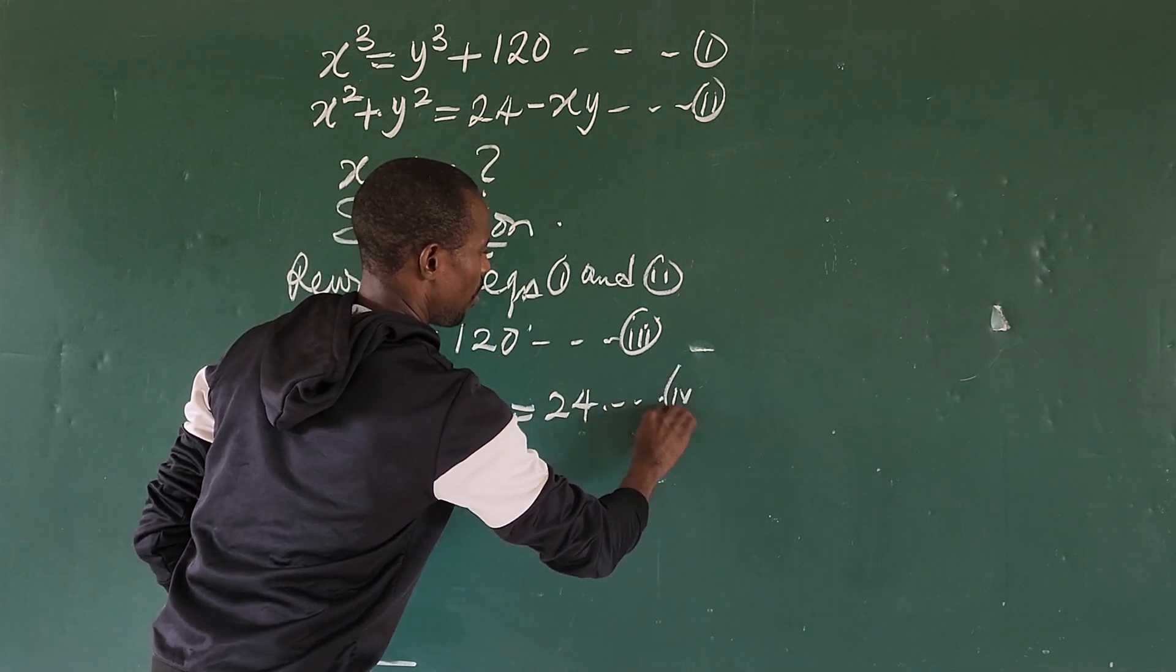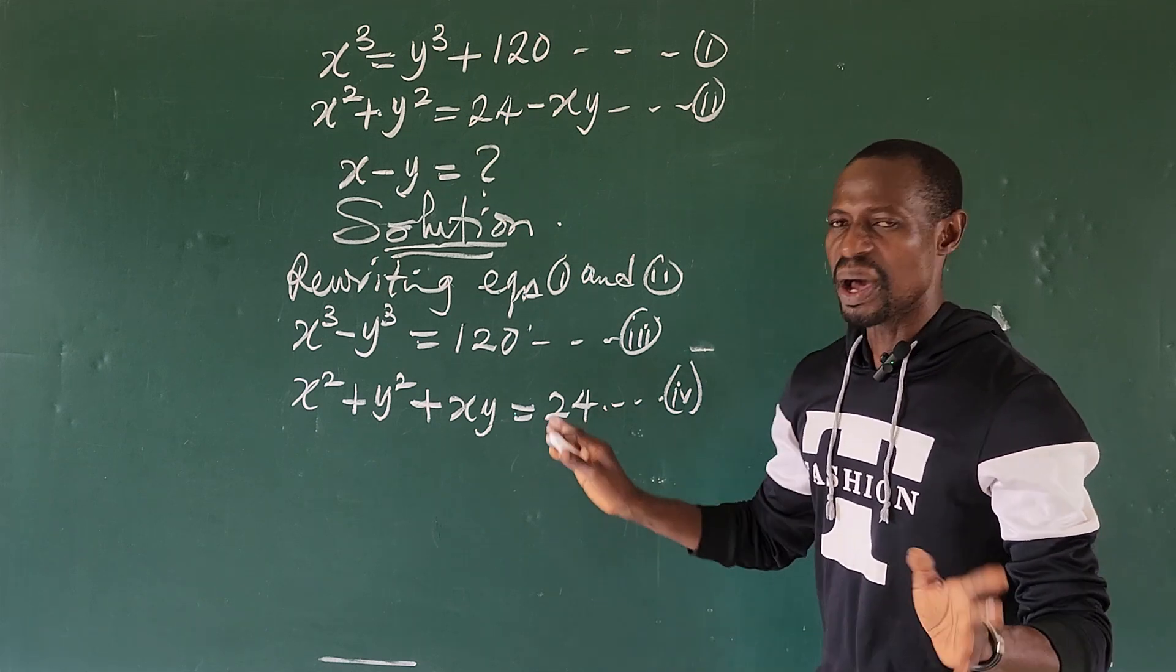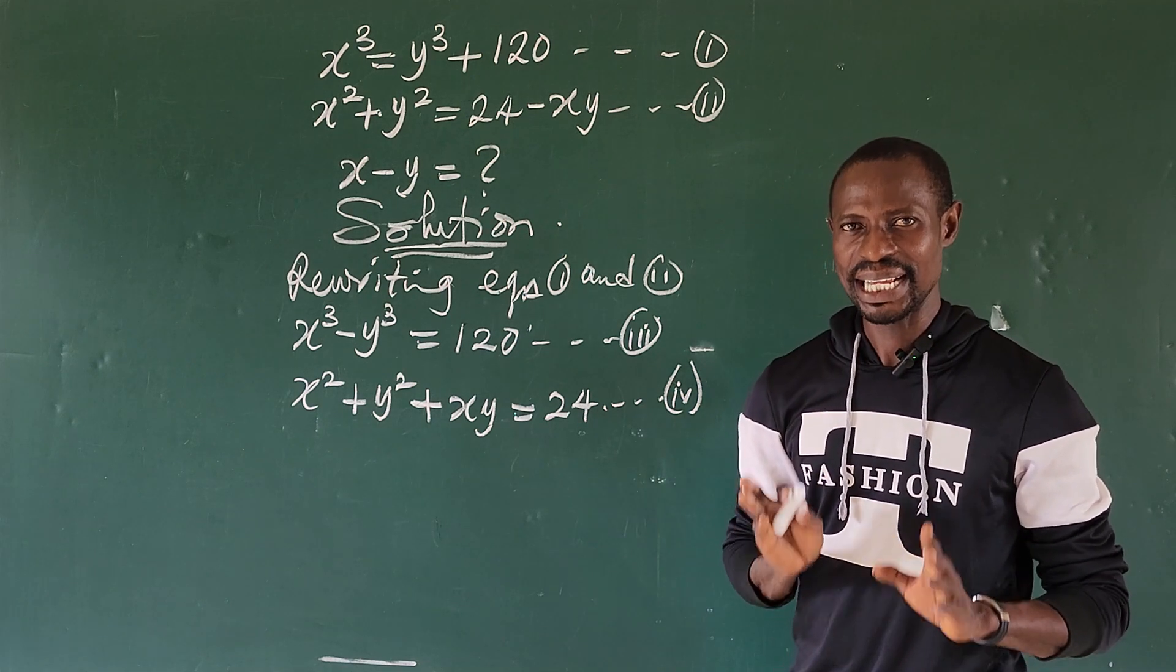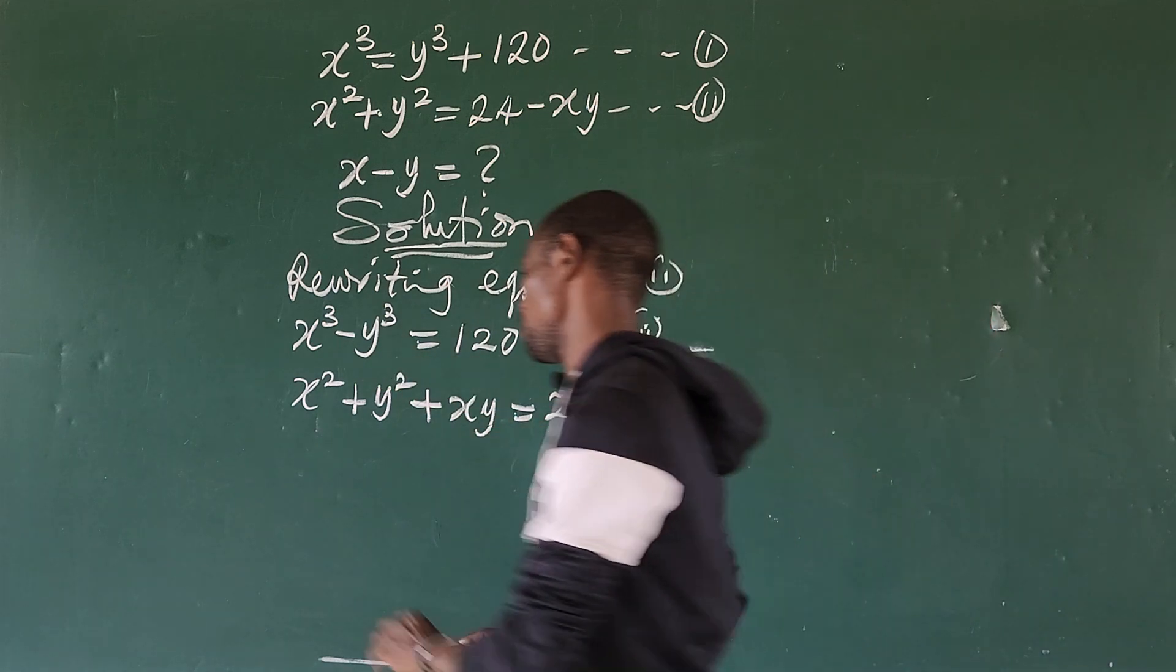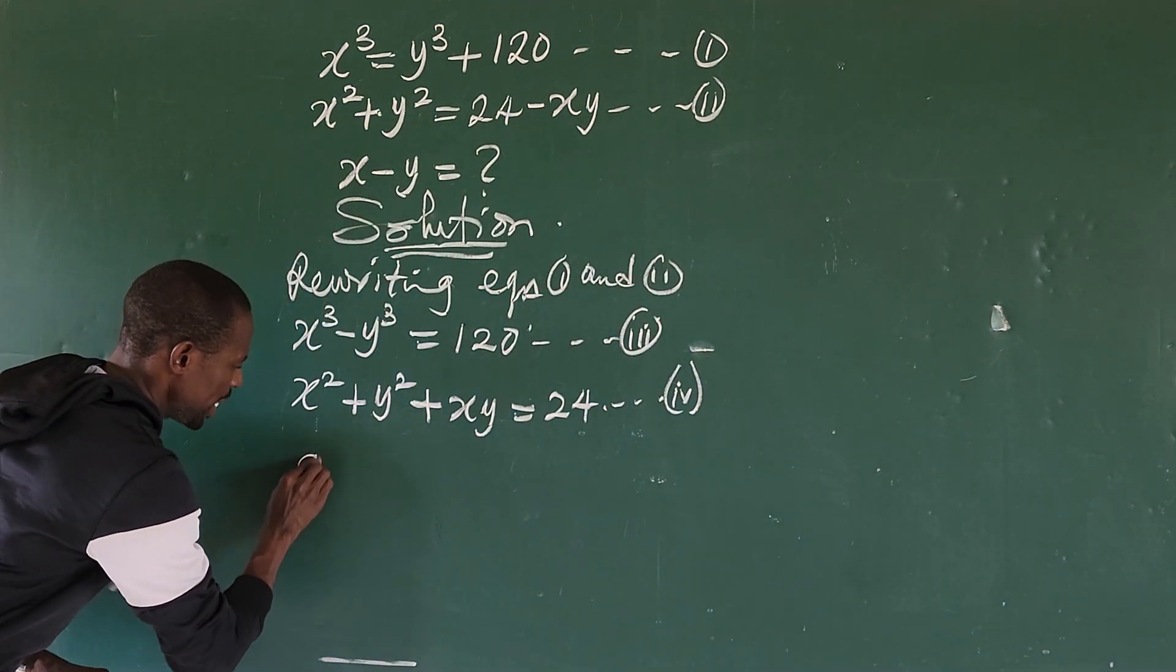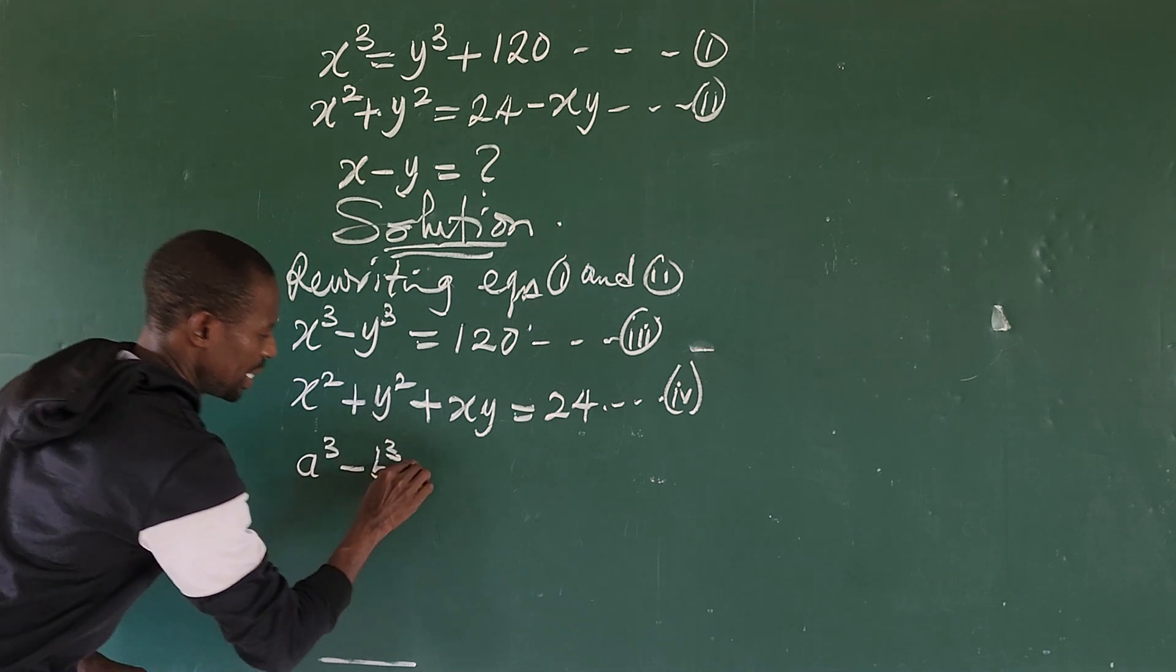Now from equation three we remember our algebraic identity. We can rewrite this. From our algebraic identity which says that if you have a³ - b³, this is equal to (a - b) times (a² + ab + b²).